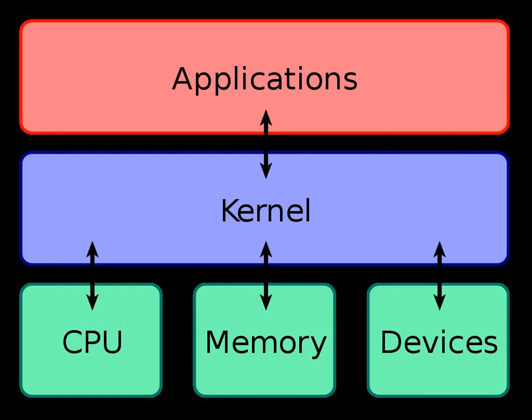Modern Unix derivatives are generally based on module-loading monolithic kernels. Examples include the Linux kernel in its many distributions, as well as the Berkeley software distribution variant kernels such as FreeBSD, DragonflyBSD, OpenBSD, NetBSD, and Mac OS. Apart from these alternatives, amateur developers maintain an active operating system development community, populated by self-written hobby kernels which mostly share many features with Linux, FreeBSD, DragonflyBSD, OpenBSD or NetBSD kernels, or are compatible with them.